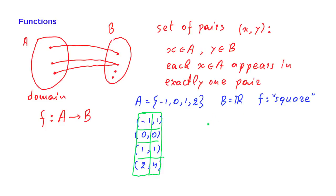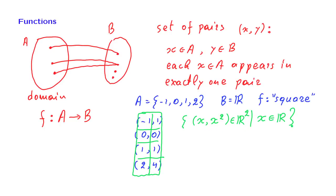For example, if you're interested in the square function from the real numbers, the way you would specify that function abstractly would be as follows: it's the set of all pairs of the form (x, x²) such that x is a real number. Such pairs belong to the two-dimensional plane, so this set can be viewed as a formal definition or specification of the squaring function.